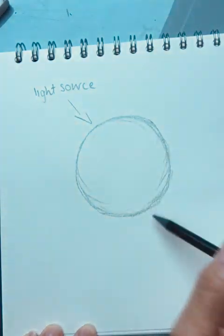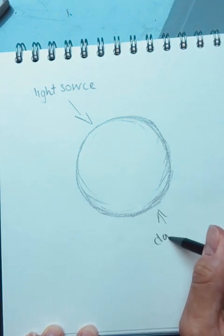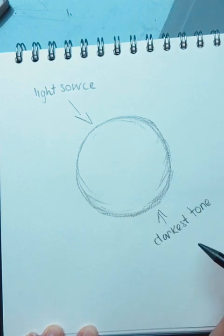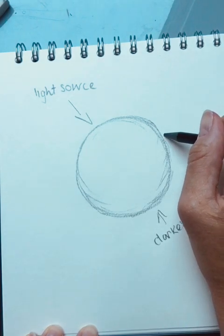On the opposite side of where that light source hits is going to be your darkest tone. In the middle is going to be the mid tones.